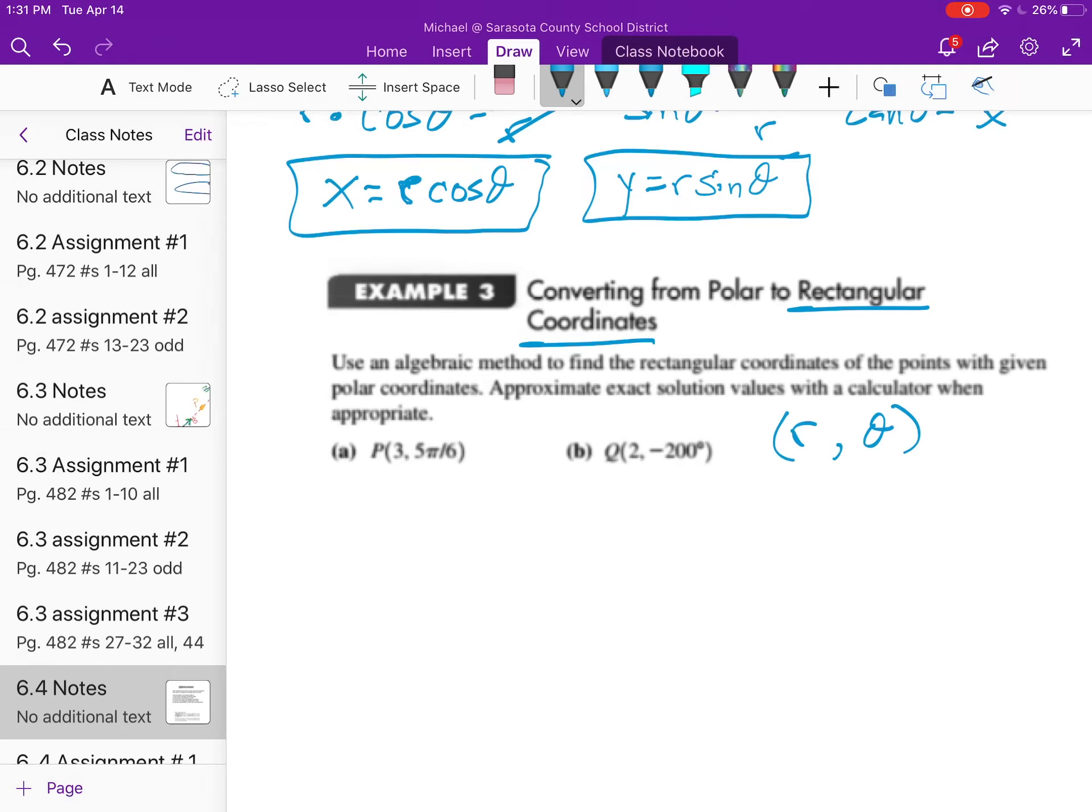We want to use an algebraic method, which is what we just did, to find the rectangular coordinates of the points with given polar coordinates and get exact solutions. Let's take a look at what we know. In this case, r equals 3 and theta equals 5π over 6.